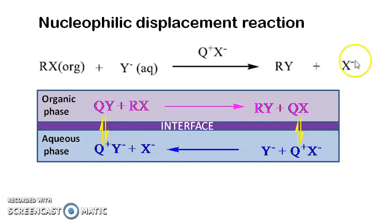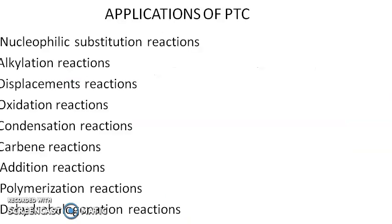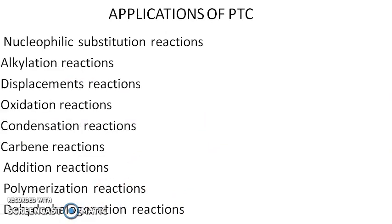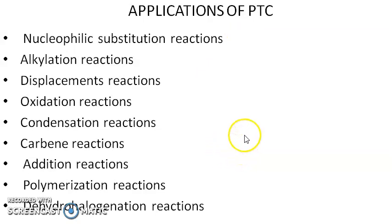Once the displaced anion is replaced, this cycle continues. Once the PTC is brought back, the cycle is completed. That is the mechanism of phase transfer catalysis. It need not be only nucleophilic displacement — we have a variety of reactions taking place using PTC, including nucleophilic substitution reactions, alkylations, displacements, oxidation, Heck reaction, polymerization, and so on.